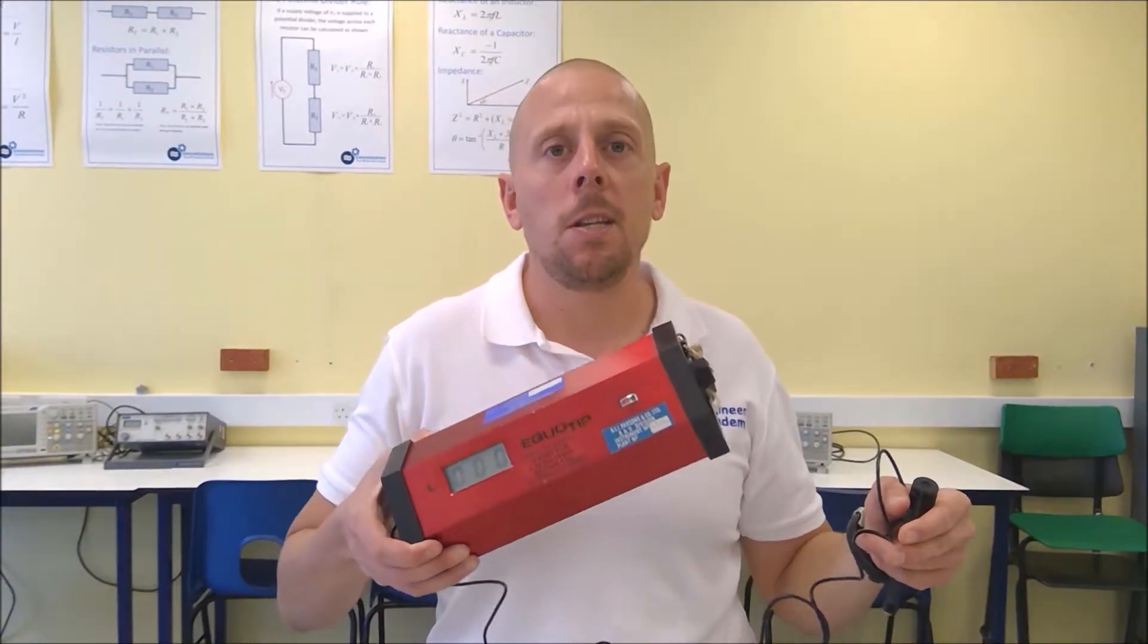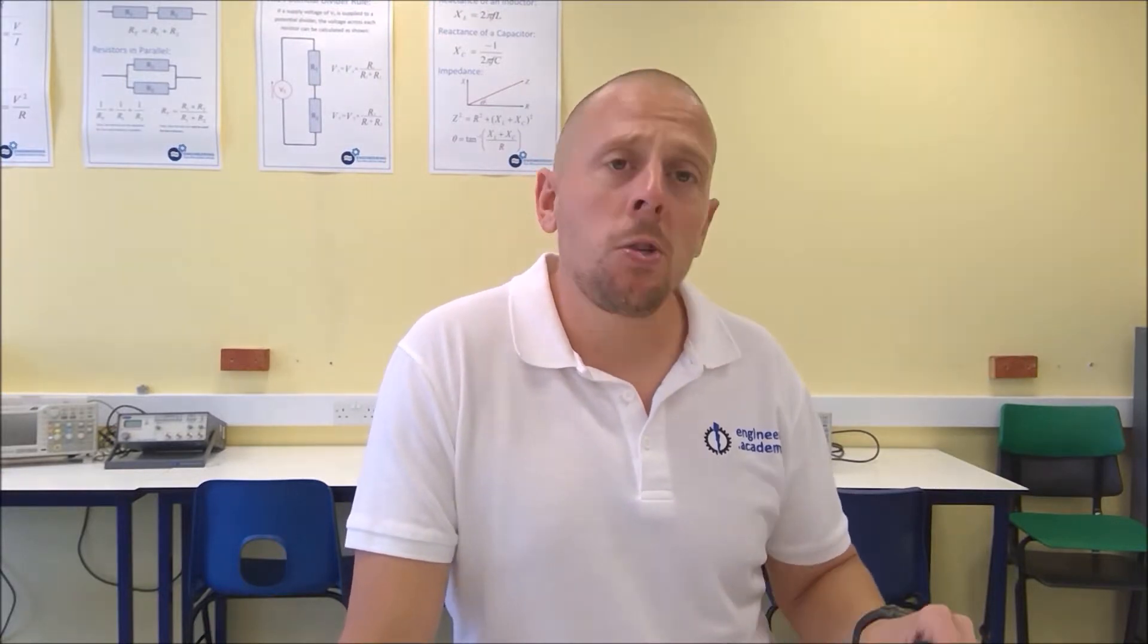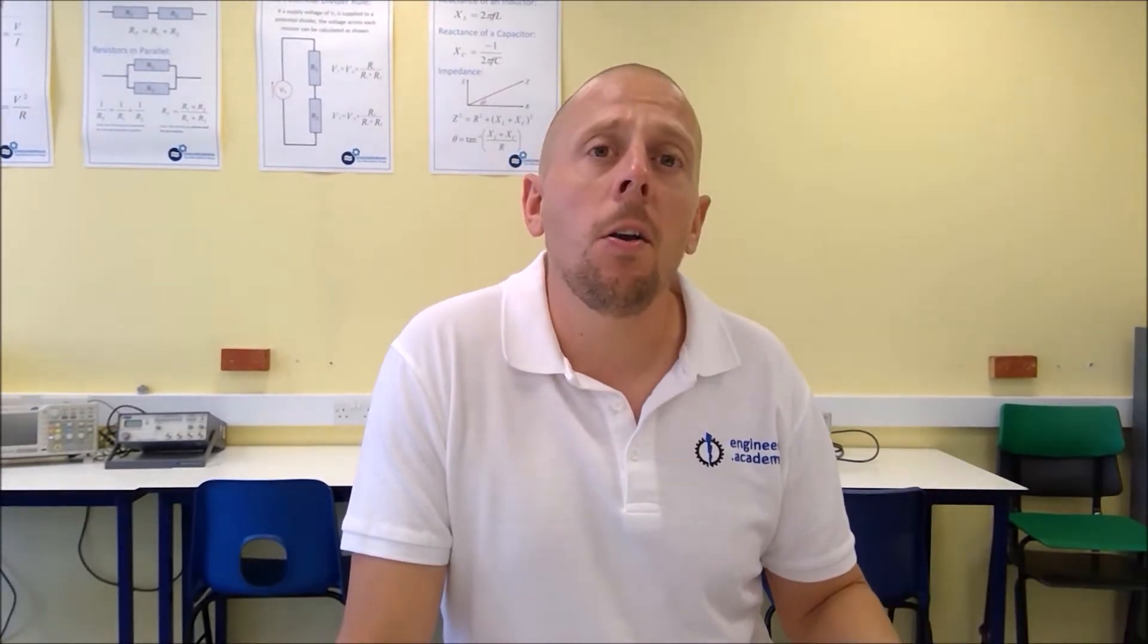So onto the device that we're going to be using. We're going to be using a Lieb hardness tester and the Lieb hardness tester will give us a reading for Lieb hardness. More commonly we would use things such as Vickers hardness or Brinell hardness and later on in the video I'll show you how we can convert our L value or our Lieb hardness into a Brinell hardness value.